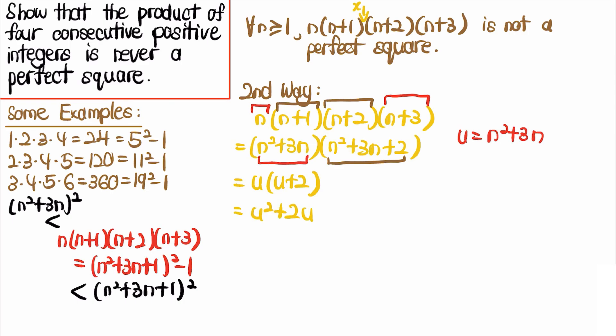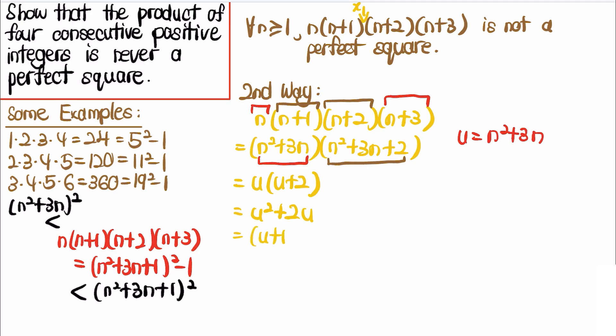We get u(u+2) = u² + 2u, which equals (u+1)² - 1. Replacing u by n² + 3n, the product equals (n² + 3n + 1)² - 1 — the same result as before. Therefore the product of four consecutive positive integers is never a perfect square.